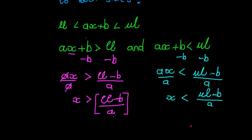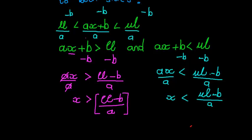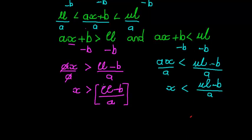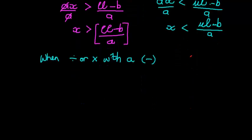In the end the process was exactly the same, so what I could have done from the very beginning is just do this in one go — subtract b from this side and from the middle, which is where I actually want to get x alone, and from this side, then divide by a in the middle, on this side, and on this side. And eventually I would get to exactly the same answer. The only point we have to keep in mind is that when dividing or multiplying with a negative — and I apologize, my writing pad seems to be giving me a little trouble —